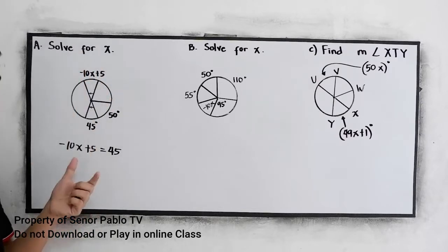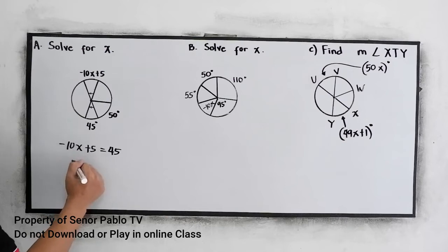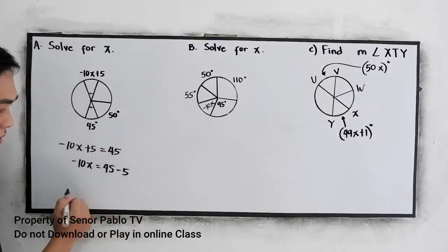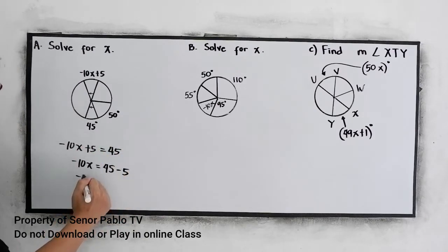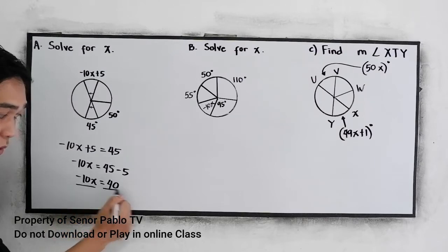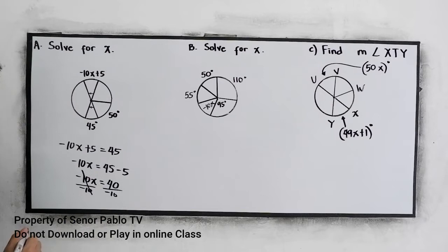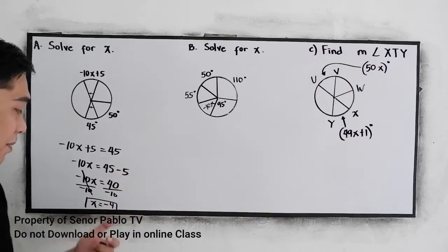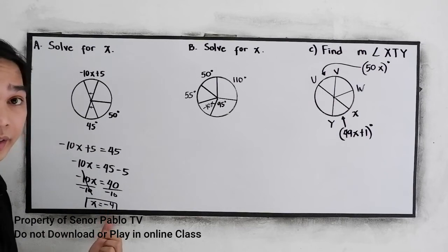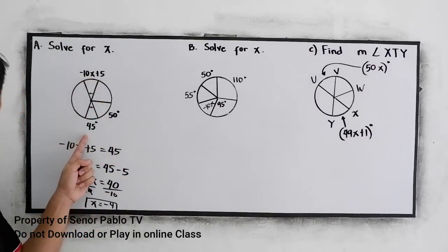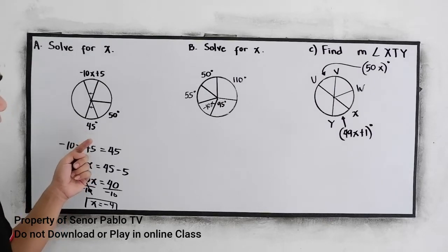We're looking for the value of X. Negative 10X is equal to 45 minus 5, which is 40. Then to find X, we divide by negative 10. X is equal to 40 divided by negative 10, which gives us negative 4. To check: negative 10 times negative 4 is positive 40, plus 5 equals 45. Our value for X is correct.